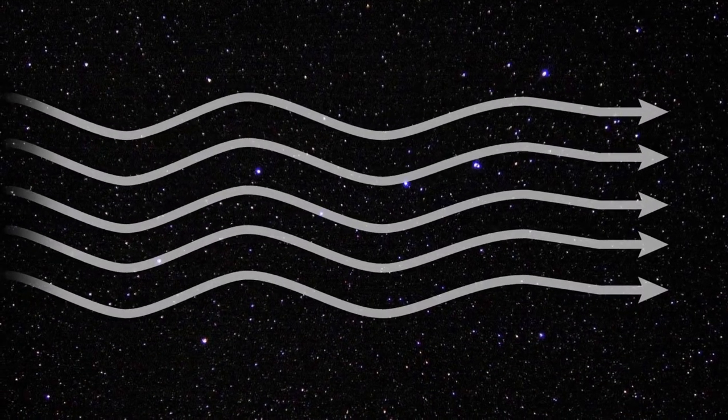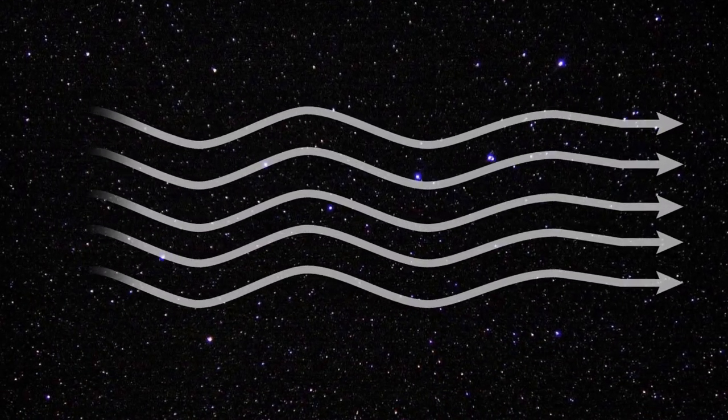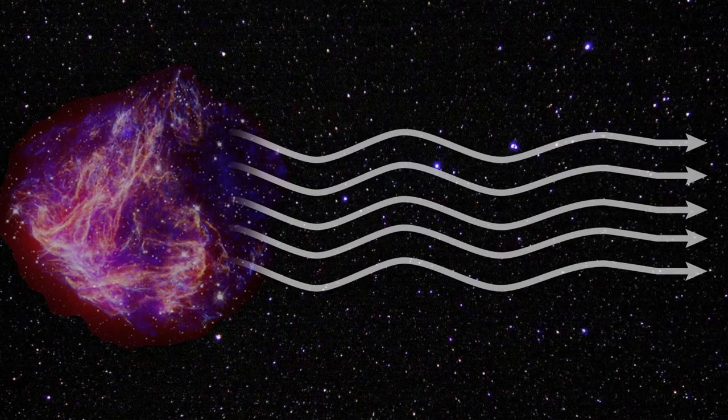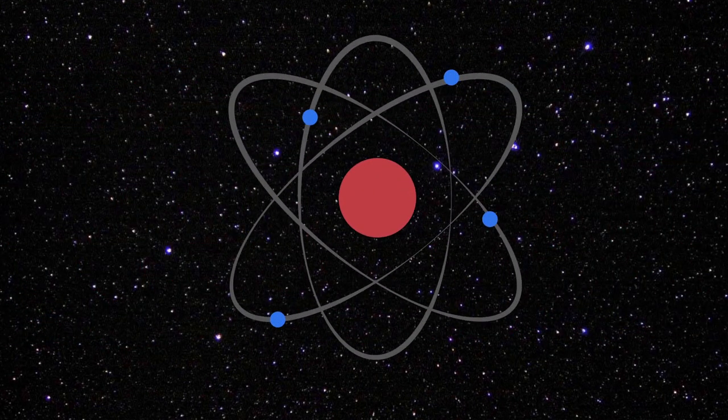Galactic cosmic rays are an important source of radiation for astronauts. The rays form when stars explode outside our solar system and are made of atoms stripped of their electrons moving at nearly the speed of light.